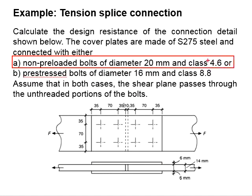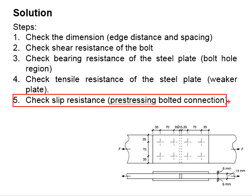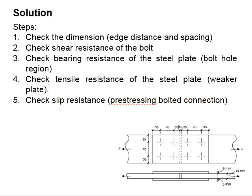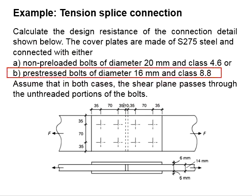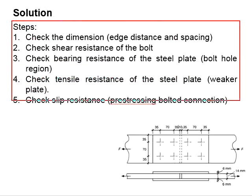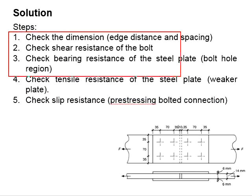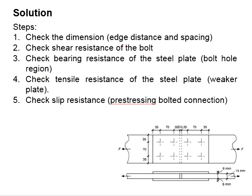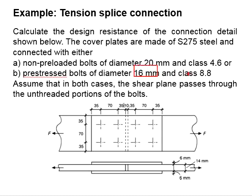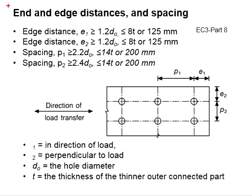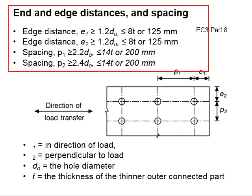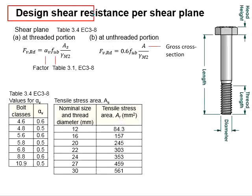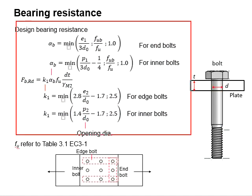For Question A using non-preloaded bolts, we do not need to check for slip resistance. Next, we look at Part B, where a pre-stressed bolt of diameter 16 mm, class 8.8 is used. The calculation steps 1 to 3 are essentially similar to those just discussed, except the bolt properties are different. You may follow through the calculation steps to determine the maximum and minimum spacing and edge distance, the shear resistance, and the bearing resistance of the steel plate.